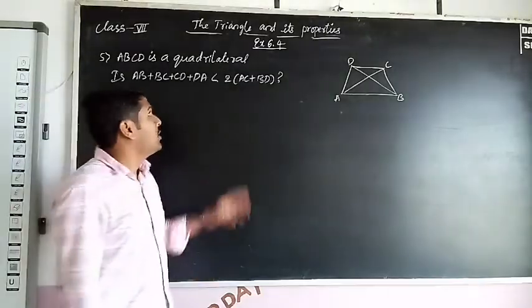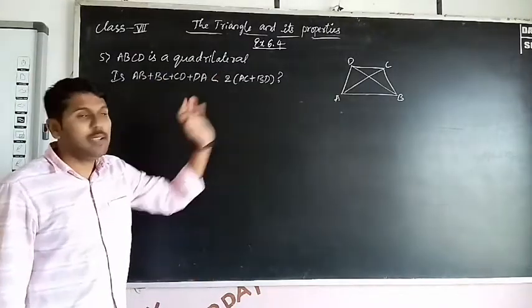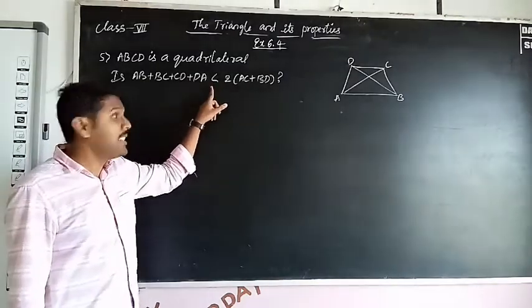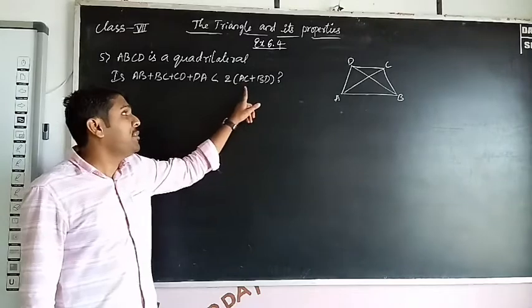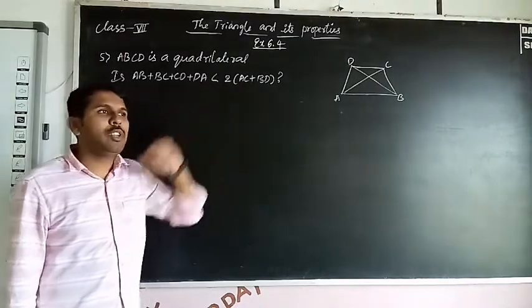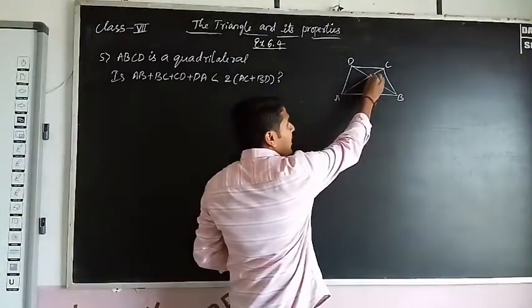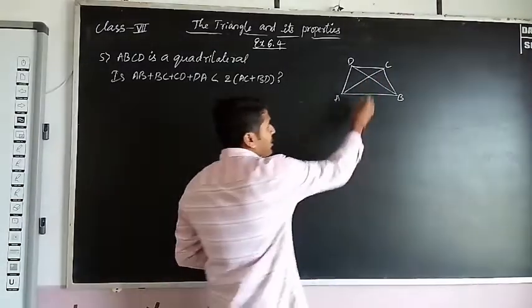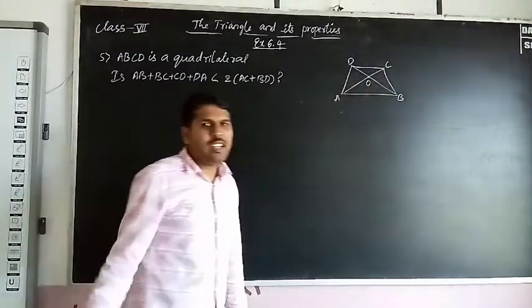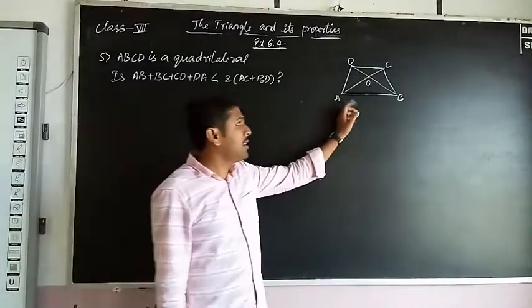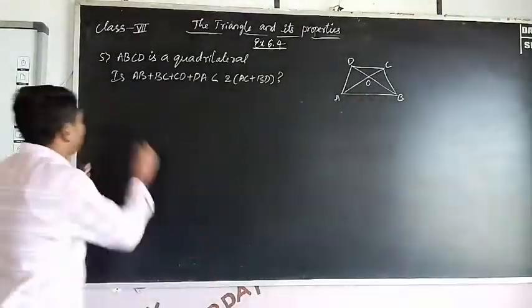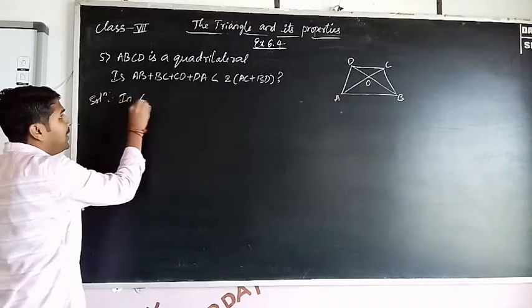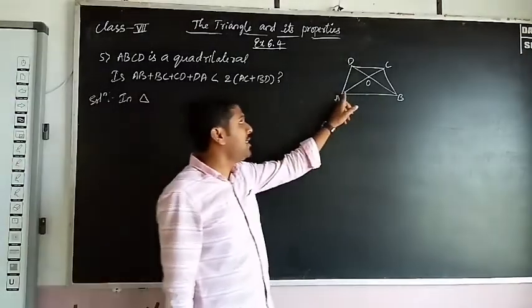Next, fifth one. ABCD is a quadrilateral. AB + BC + CD + DA is less than two times AC plus BD. So how to solve this one? First, take a point inside the quadrilateral. Take any point, call it O.